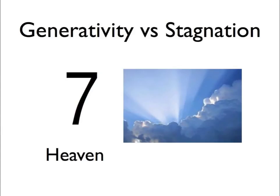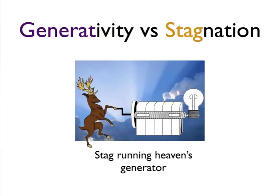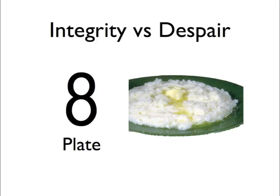Number seven is generativity versus stagnation. Seven is heaven. Generativity has the word generate in it, so let's picture a generator. For stagnation, let's put a stag there — a stag turning the generator. So when we think seven is heaven, we picture a stag running a generator in heaven.